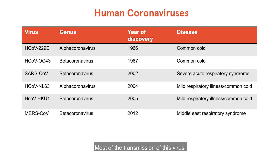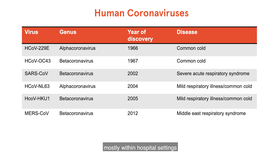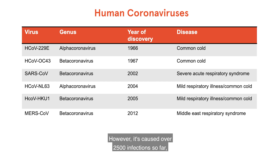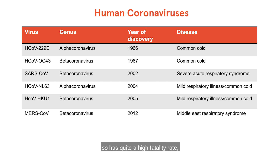Most of the transmission of this virus was from camels into humans, with some limited human-to-human spread, mostly within hospital settings, because the transmissibility of this virus doesn't appear to be particularly high. However, it's caused over 2,500 infections so far and over 860 deaths, so it has quite a high fatality rate, somewhere between 20 to 40%.